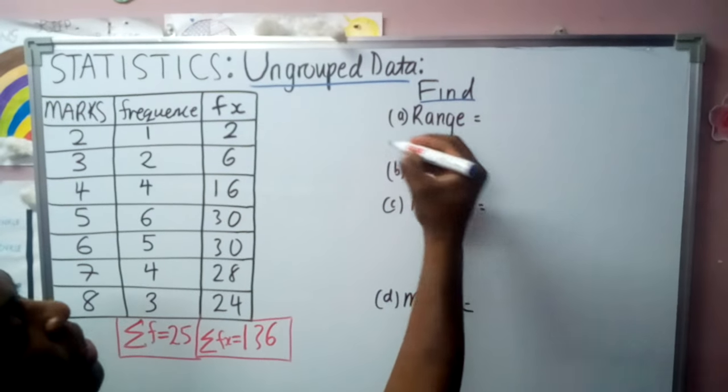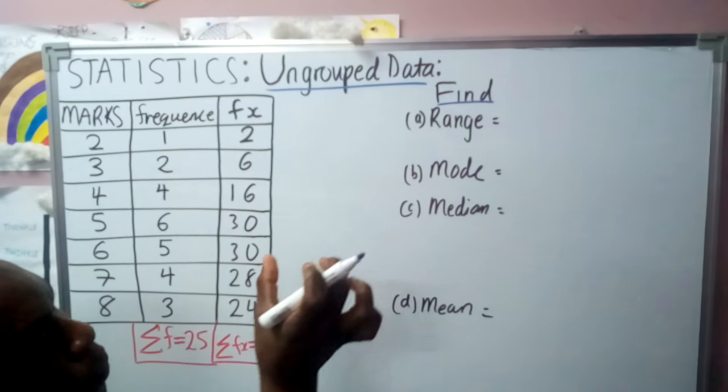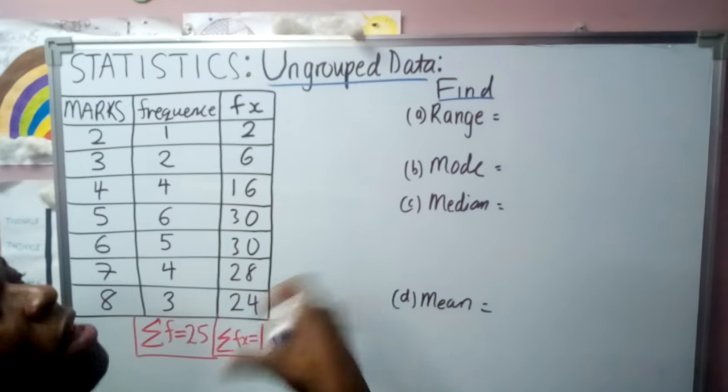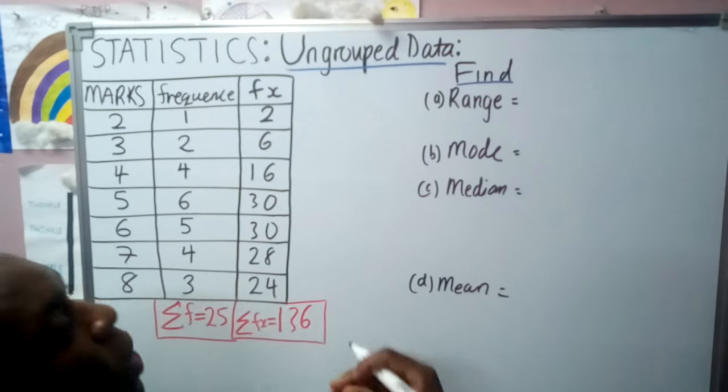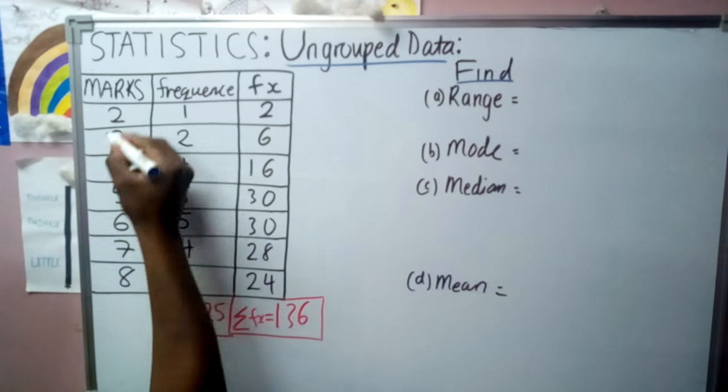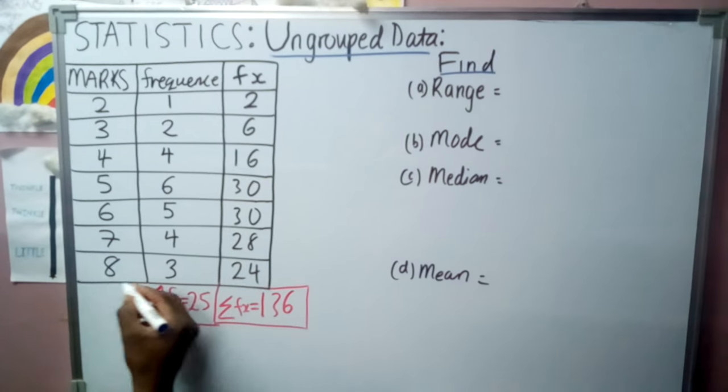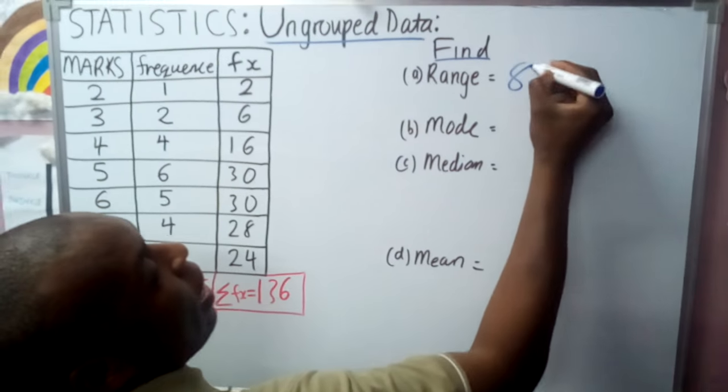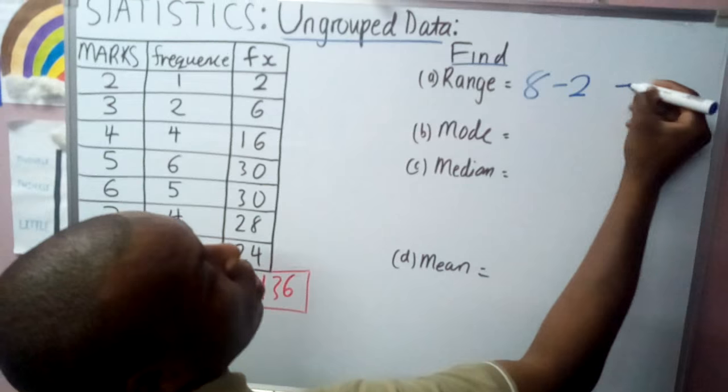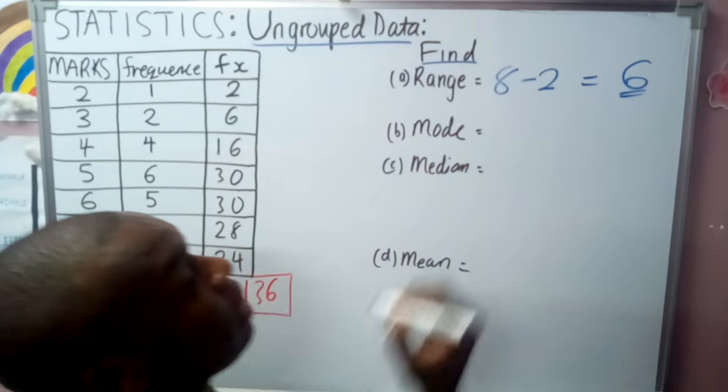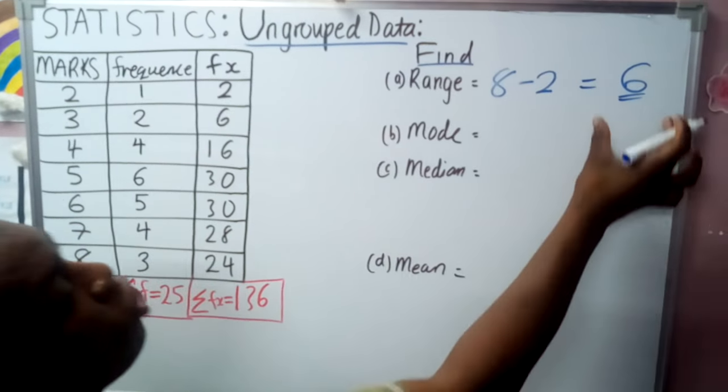Now we want to find the range. Range is the difference between the highest and the lowest data. According to our information, the lowest data is 2 and the highest data is 8. Hence, 8 minus 2, we get 6. This means our range is 6.